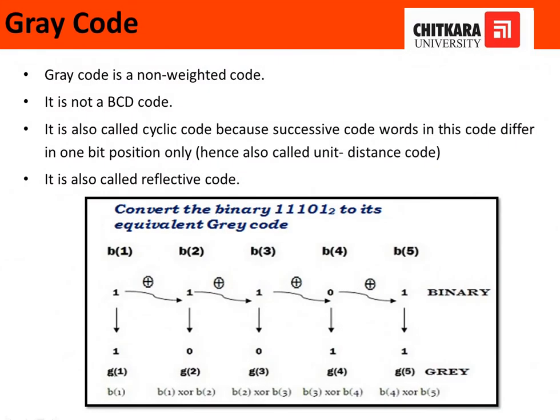This slide explains the properties of the gray code and how we can extract the gray code from the binary input. In order to understand this, look upon these properties: it is a non-weighted code, it is a BCD code, and it is also called unit distance code and reflective code. These are the other names of the gray code.